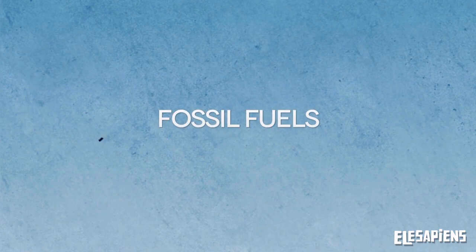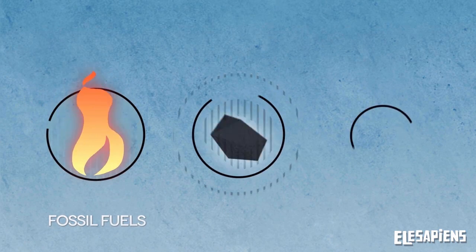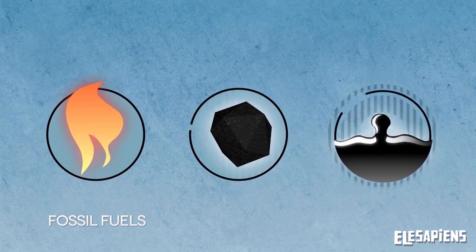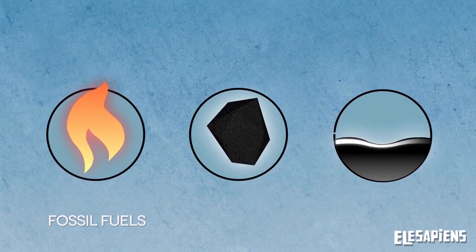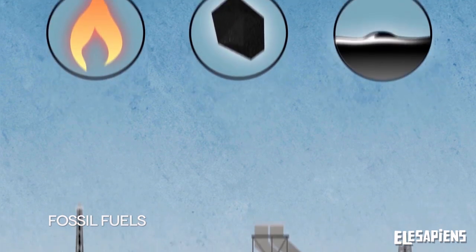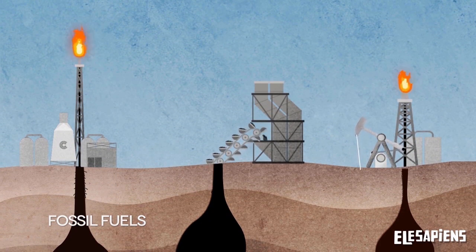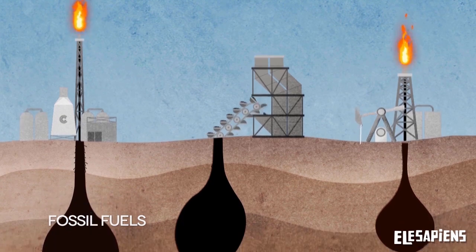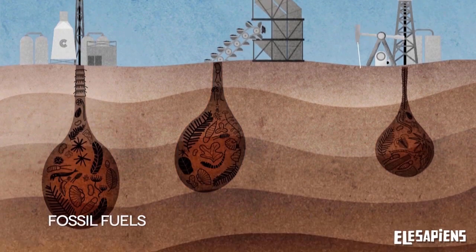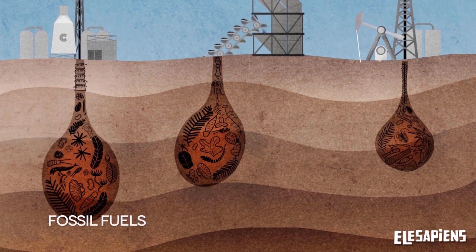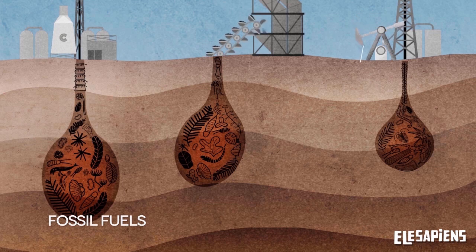There are three types of fossil fuels: natural gas, coal, and petroleum, which are extracted from the Earth in different ways. These are combustible fuels because they burn to produce energy, and they are fossil because animals and vegetables that lived on Earth millions of years ago formed them.